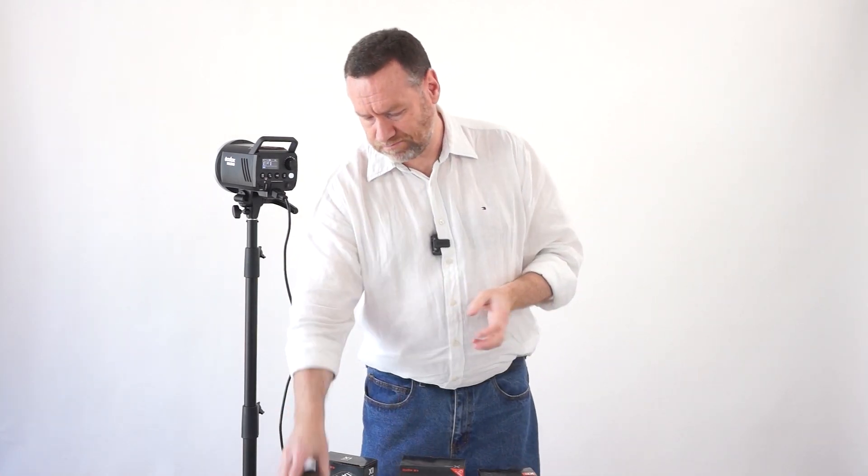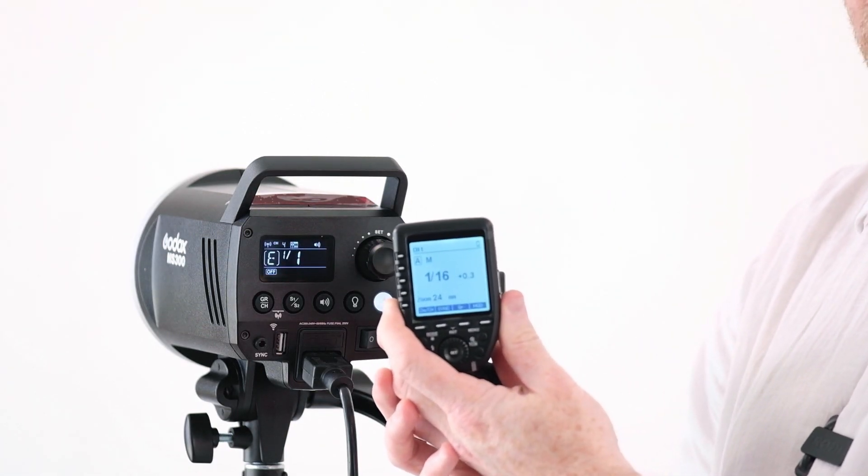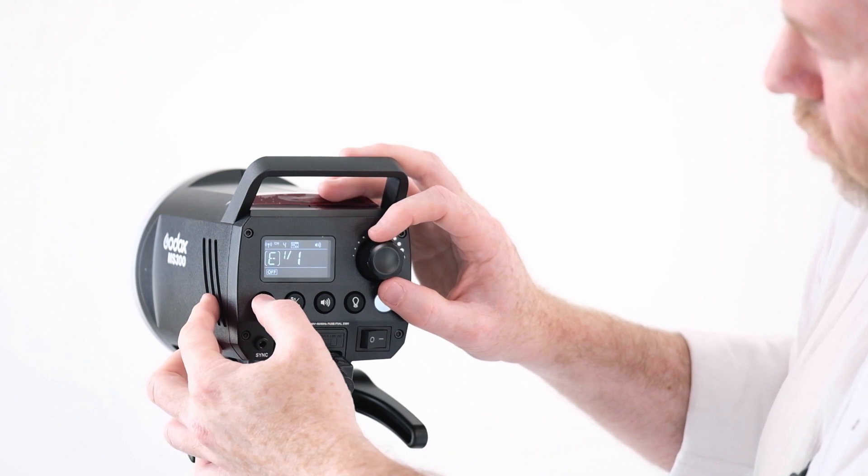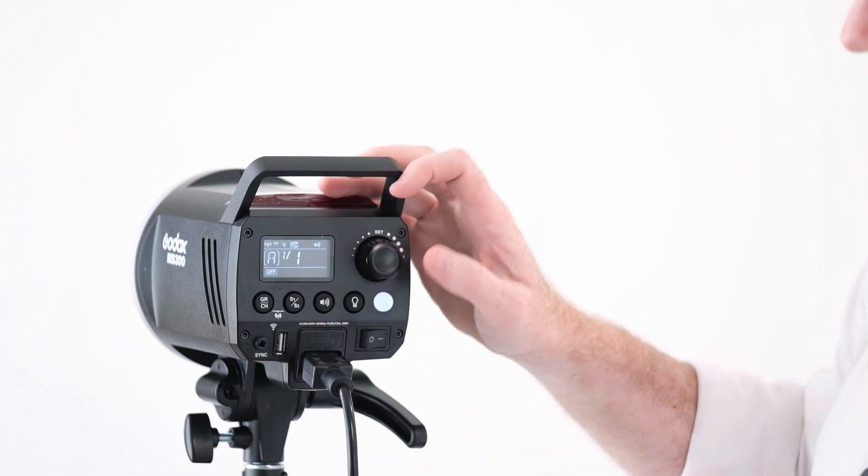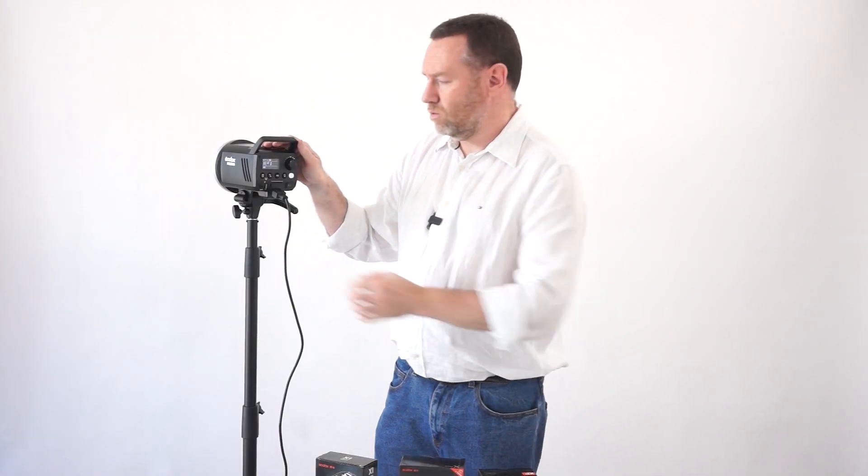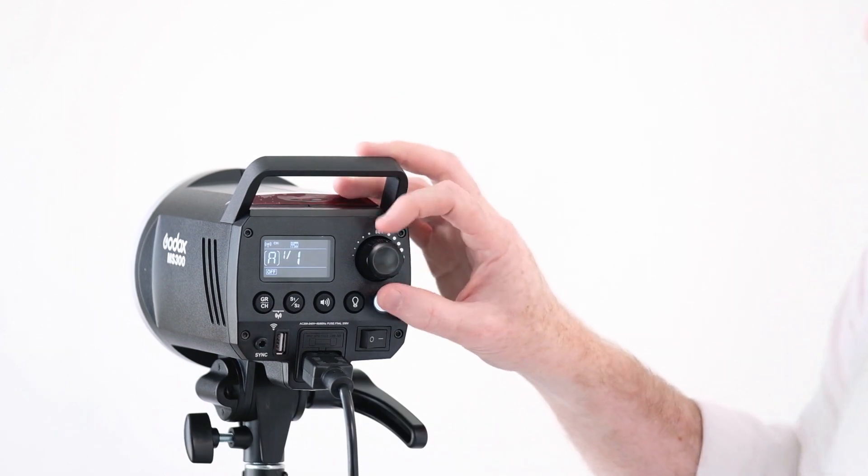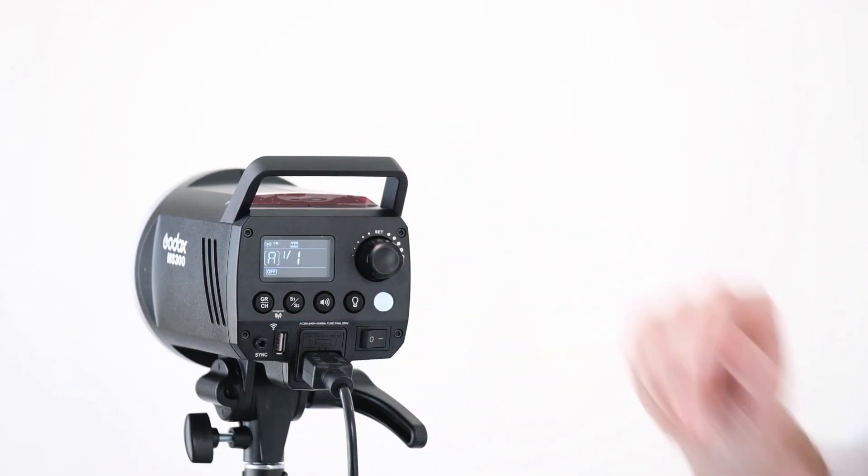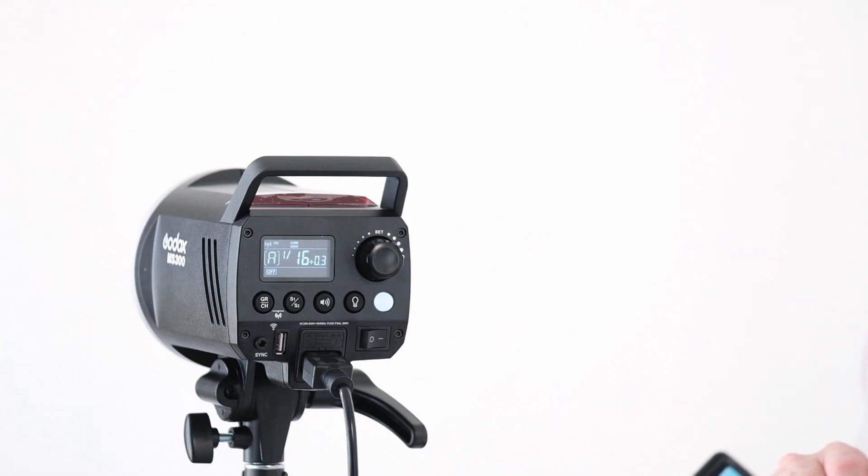If we're going to use the Godox X-Pro trigger, I'll turn this one on. This one's currently set to channel 1, group A, so we'll need to make sure the flash is set to the same setting. I'll tap the group button—it's currently on F—and set it back to A. Now the channel starts flashing, and now we're on A and 1. That should give us wireless control of the flash. If I do a test fire now with my trigger, it fired and it's also dialed in the same power setting—currently saying 1 over 16 plus 0.3.